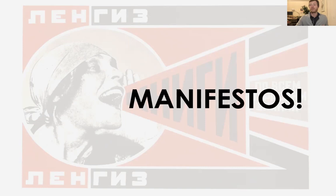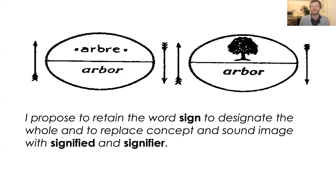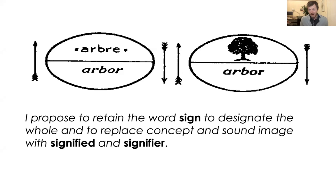I wanted to just make sure, as we set off thinking about these manifestos, that we've got a clear understanding of the sign/signifier/signified relationship. I didn't see any questions on the lecture, so I'm assuming that everybody gets this. The concept, the thing we envision in our head, is the signified. The sound image that we create is the signifier. Together, those are a sign — but a linguistic sign. And then we also have graphic signs. The artists whose work we look at for this week play a lot with those graphic signs.